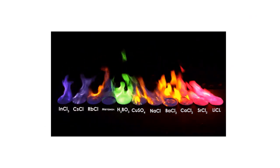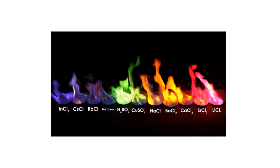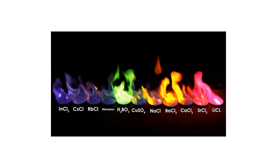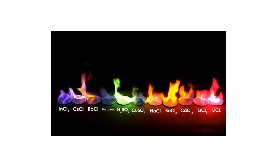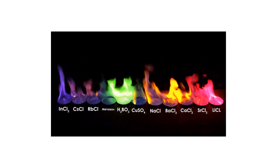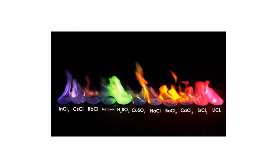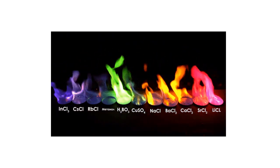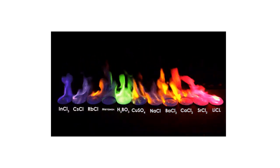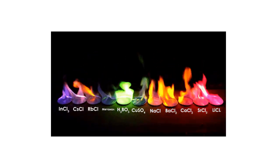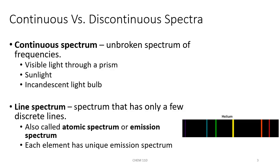You may have seen an experiment where different salts are dissolved in an alcohol such as methanol and then lit on fire. The flame provides energy to excite the electrons in the different ions to jump to higher energy levels. Usually it's the metal ion giving off the color we see in the visible region, but this is kind of like a fingerprint for that particular element.